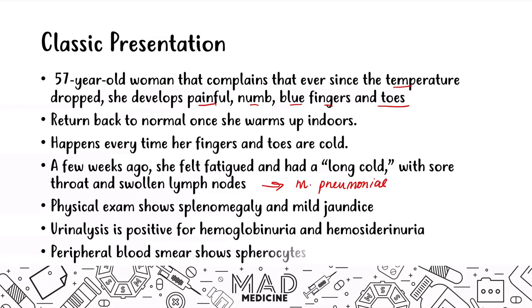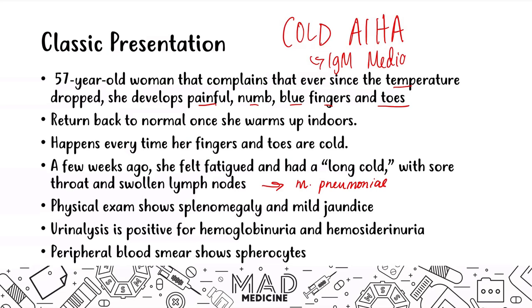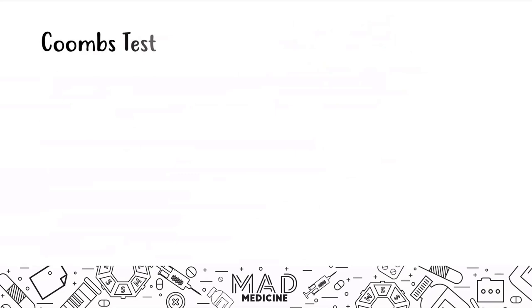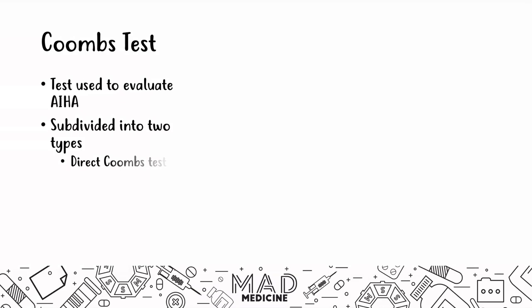All of this points to cold autoimmune hemolytic anemia, which is IgM-mediated. On boards, they may write IgM-mediated hemolytic anemia or just autoimmune hemolytic anemia — you need to know the infectious agent is mycoplasma pneumoniae. The Coombs test is the key diagnostic test for autoimmune hemolytic anemias, and it can be subdivided into the direct Coombs test and the indirect Coombs test.